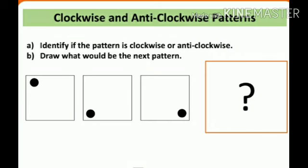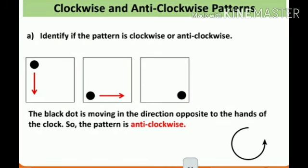Our next question is: identify whether this pattern is clockwise or anticlockwise, and second, draw what would be the next pattern. You can observe here the black dot is moving in the direction opposite to the hands of the clock. So this pattern is anticlockwise.